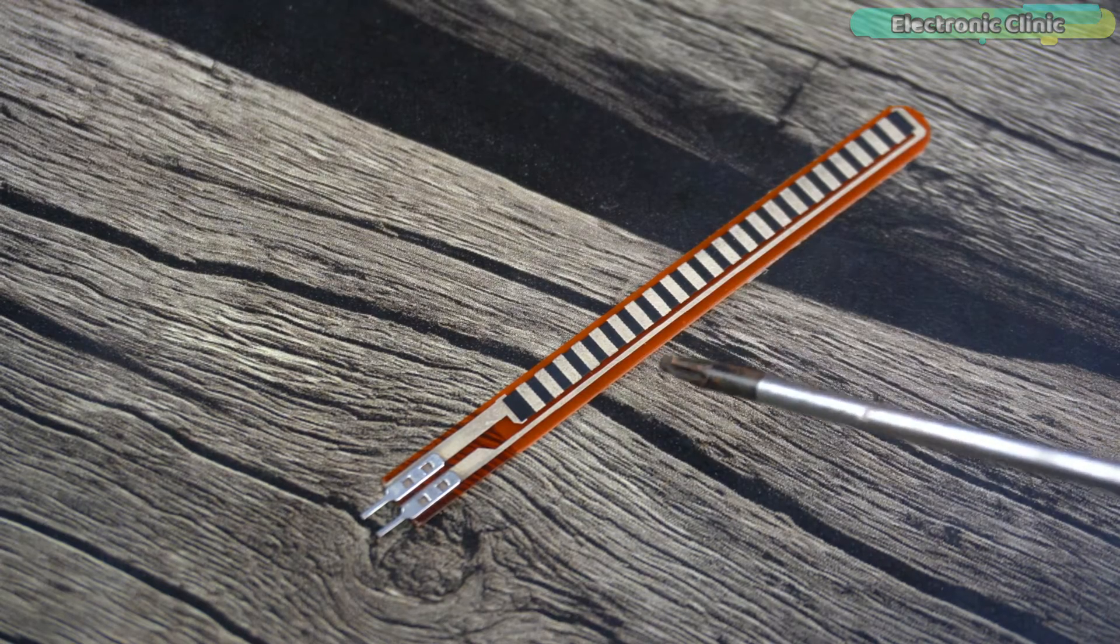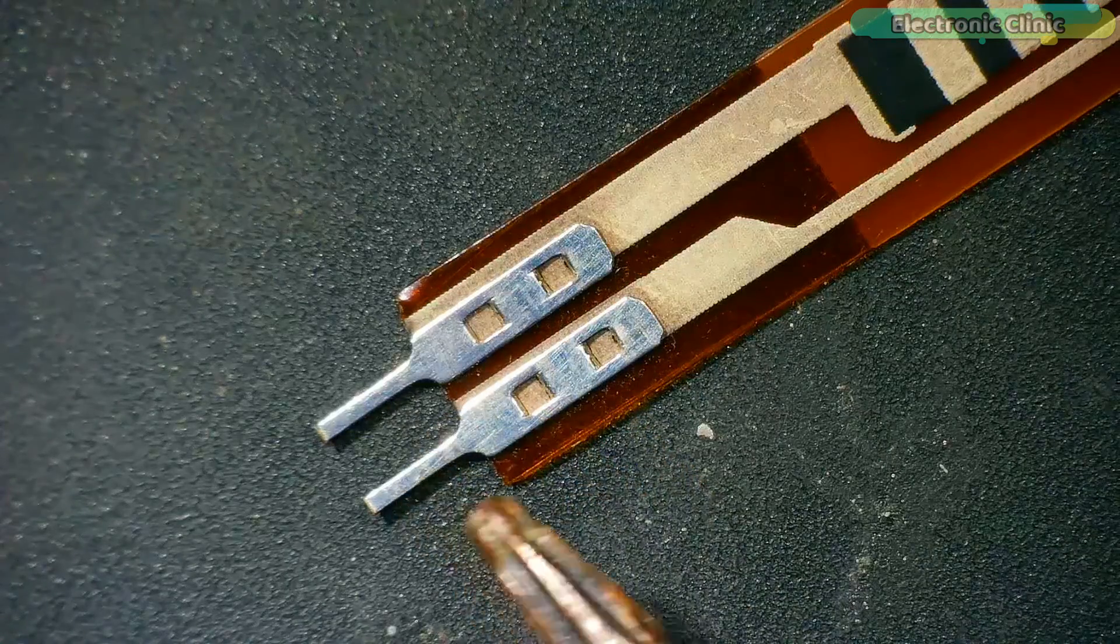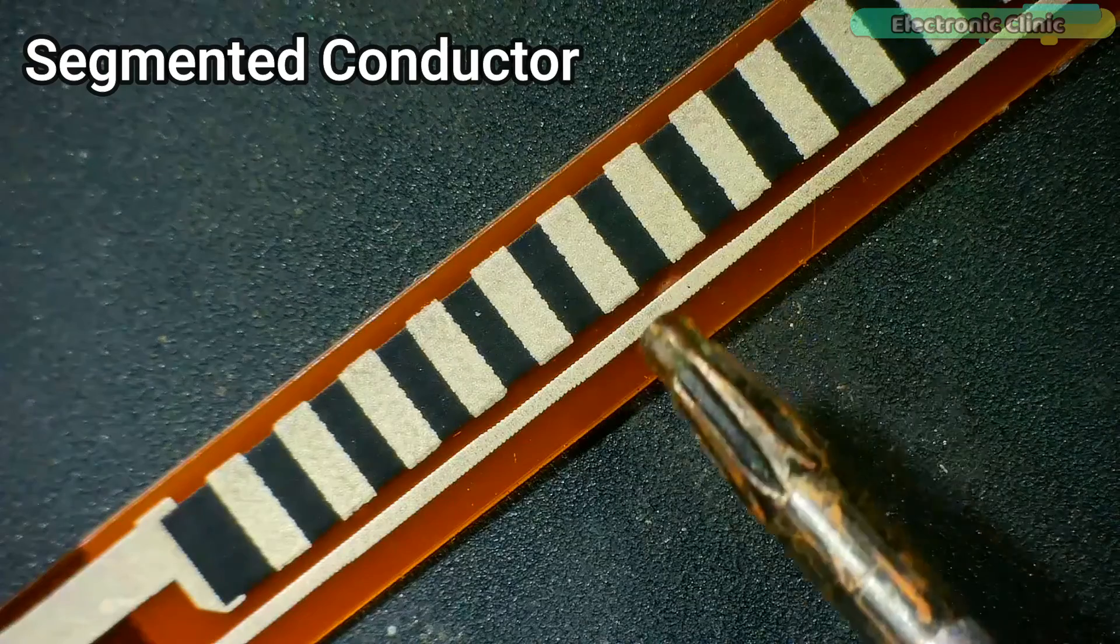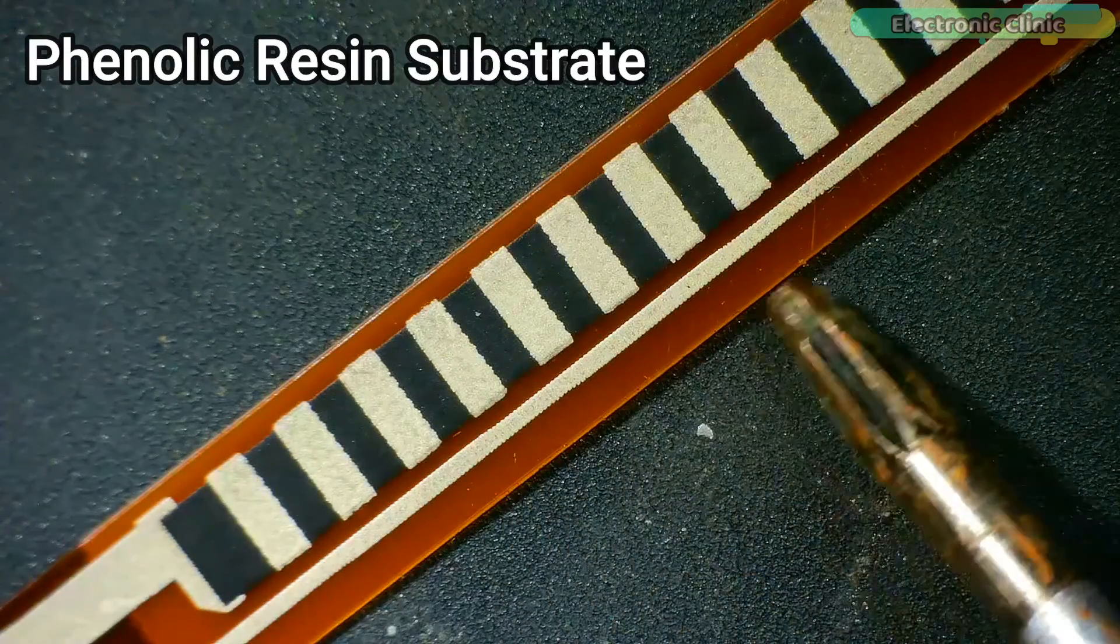A flex sensor mainly consists of four main parts: the two contacts having no polarity, segmented contactor, conductive ink, and phenolic resin substrate.